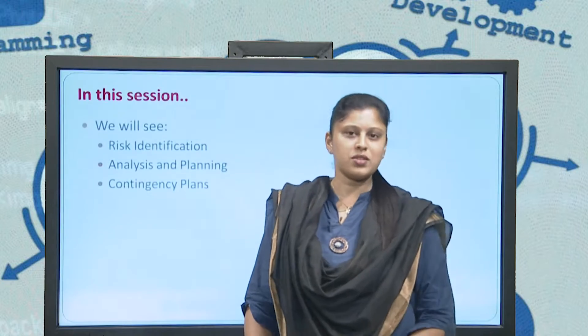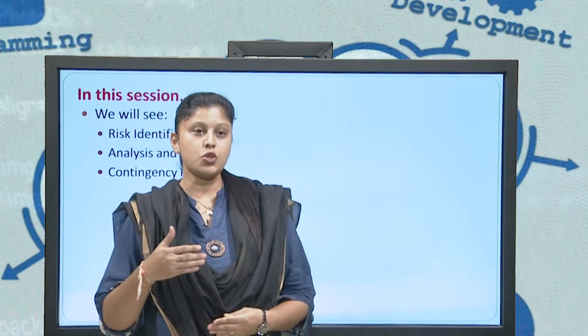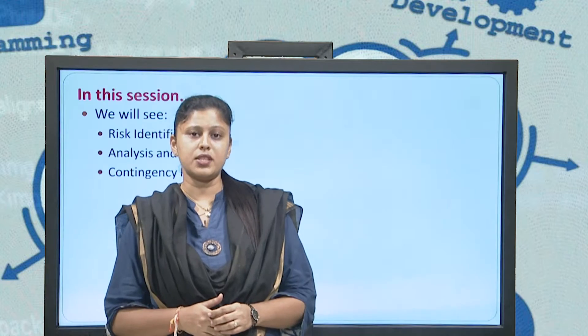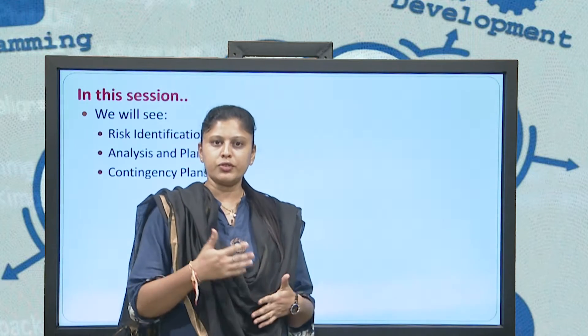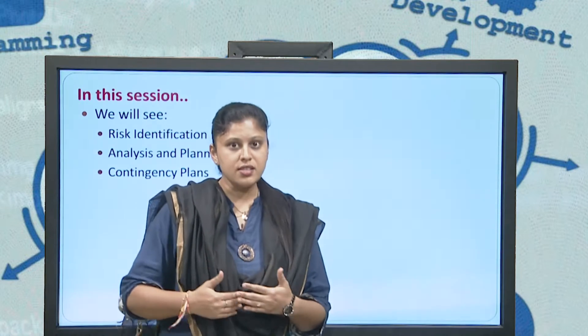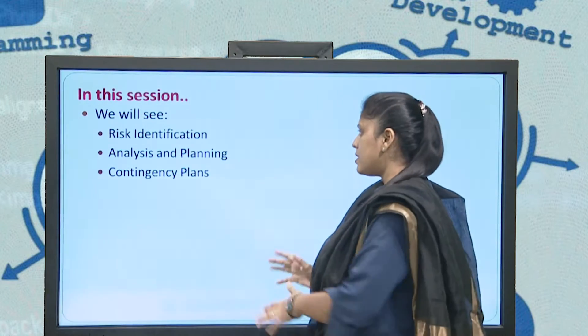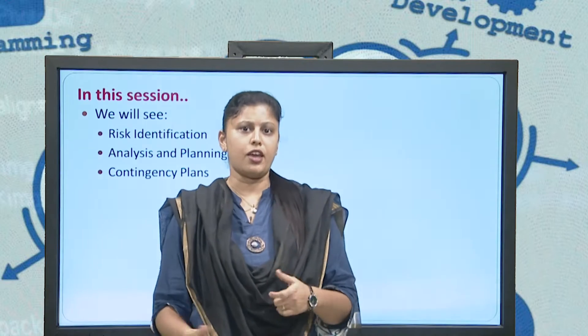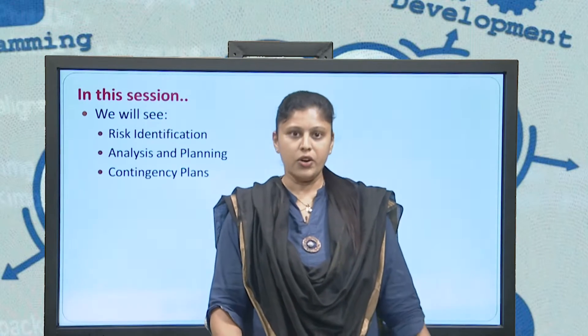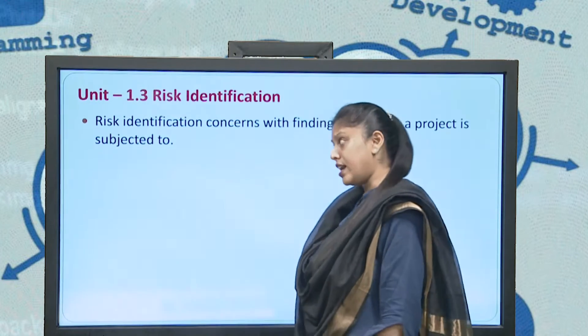Welcome once again, we are here for video lectures for Omkari dealing with software engineering for BCA, the code is BCA 403. In the last session we saw something related to software risk management — the need for the process and a few steps of its implementation. In today's session we will be seeing risk identification, the analysis and planning, and the contingency plans that we have for risk management. Let us start with the first topic: risk identification.